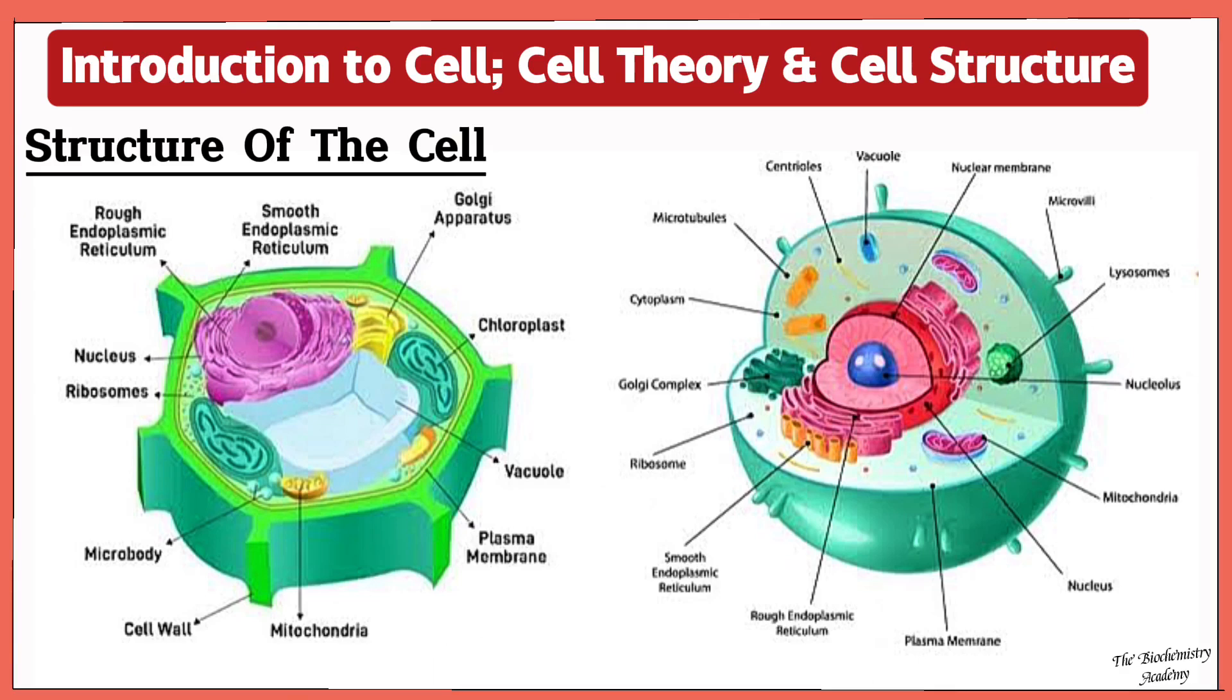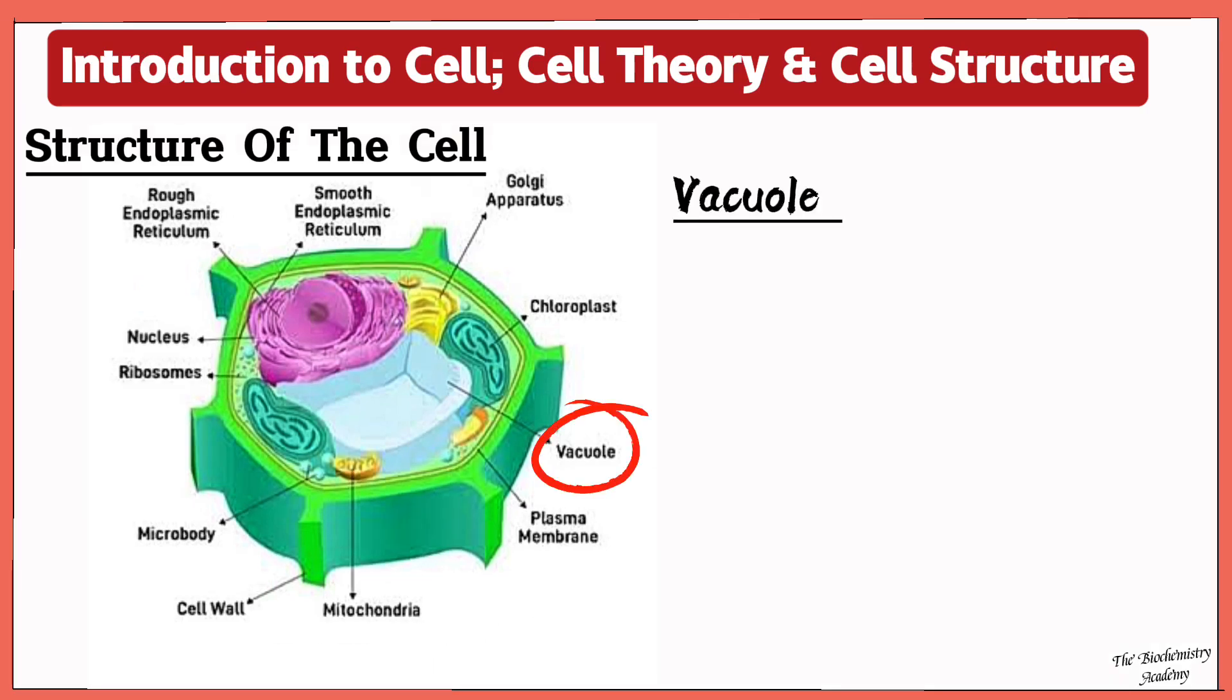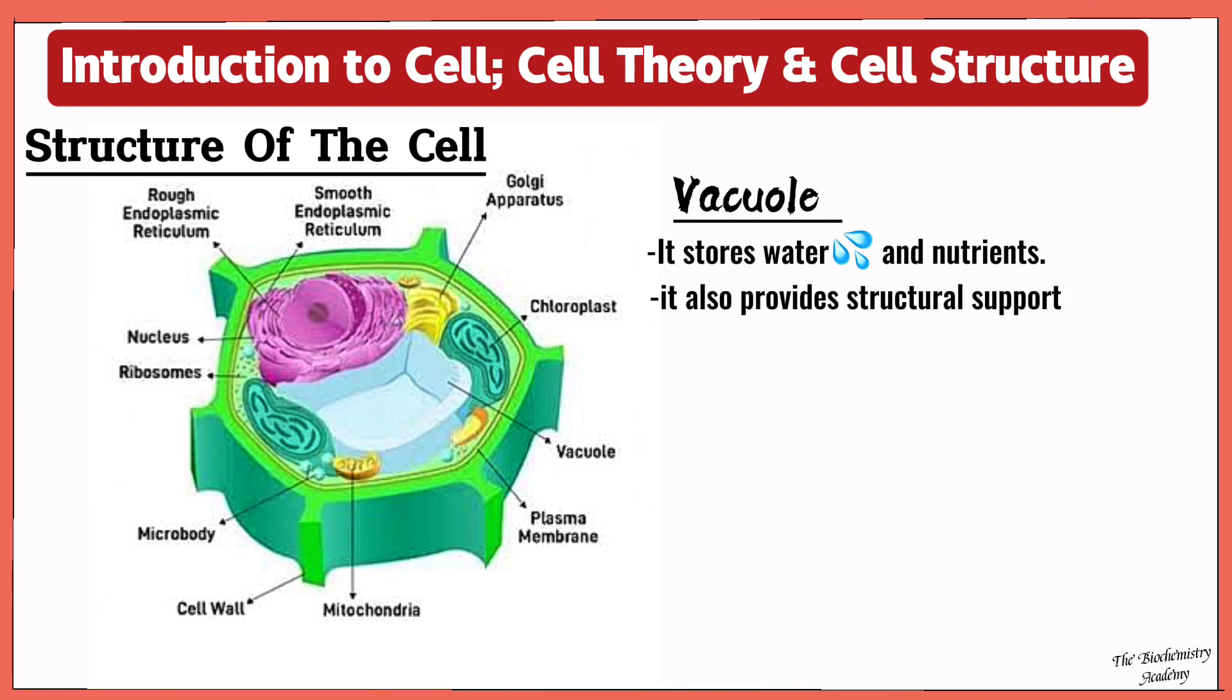Now the first difference between the animal cell and the plant cell is that in the plant cell there is the presence of a very large vacuole. Now this vacuole stores water and nutrients, and it also aids to provide structural support for the cell.